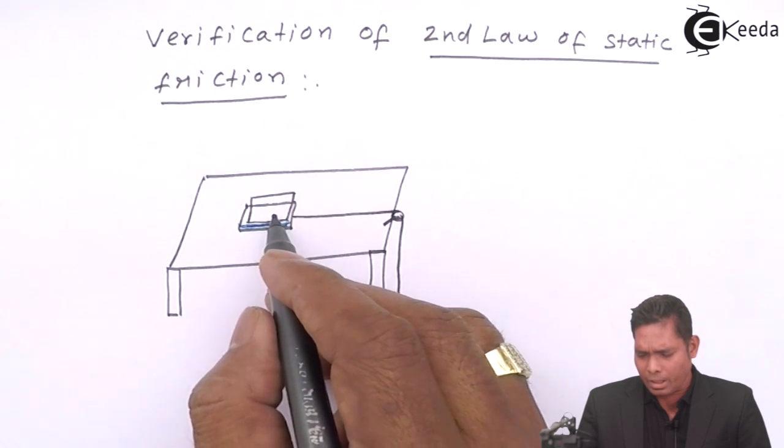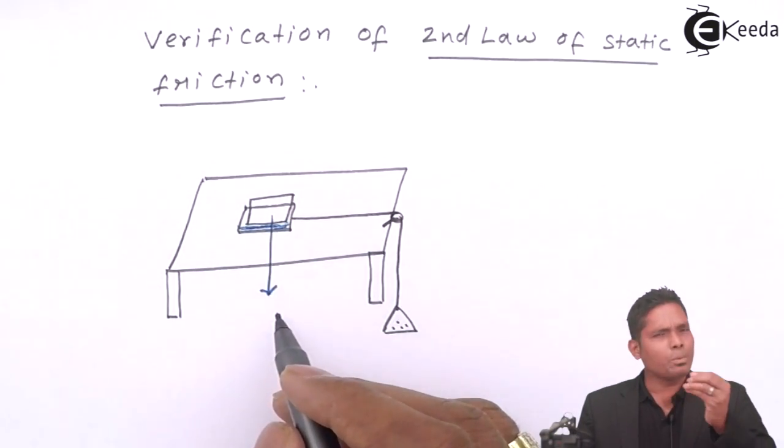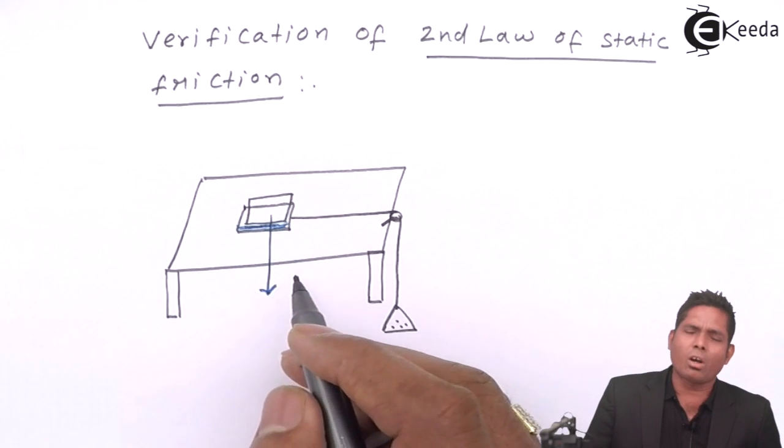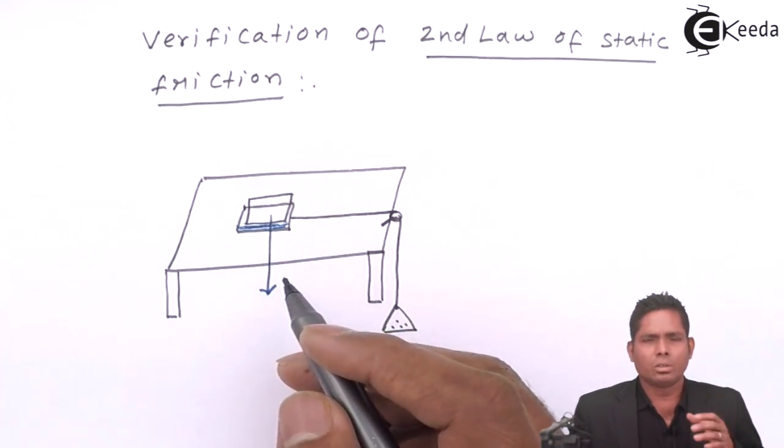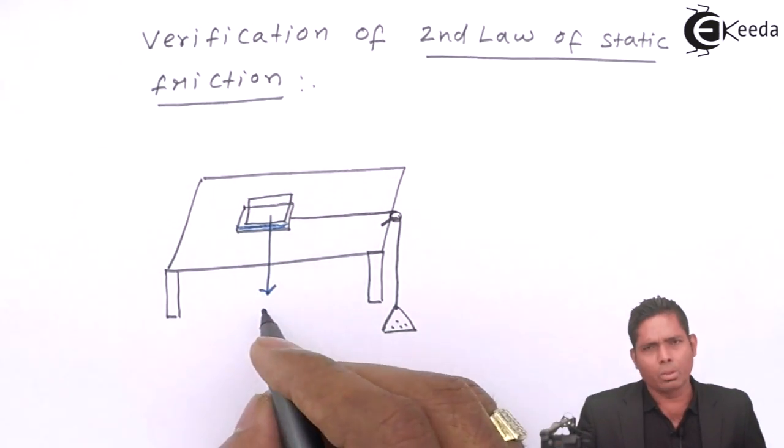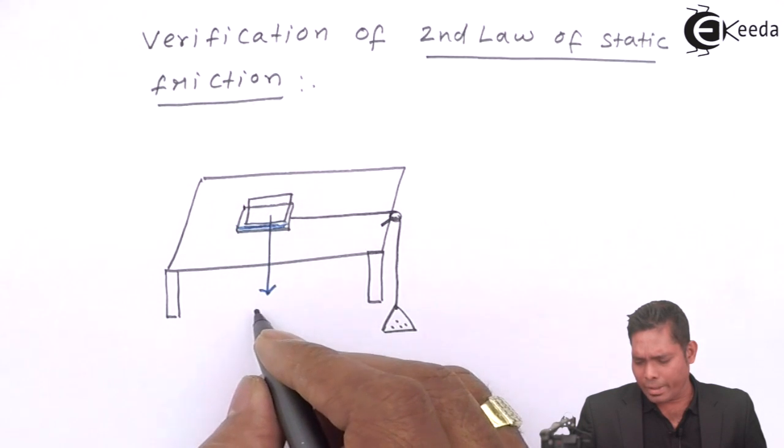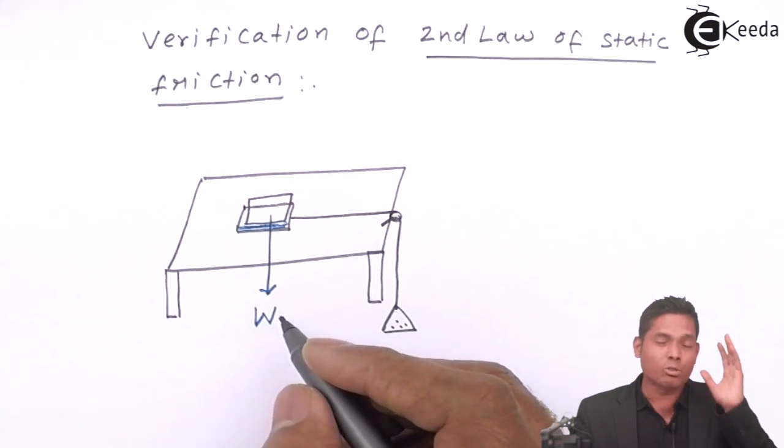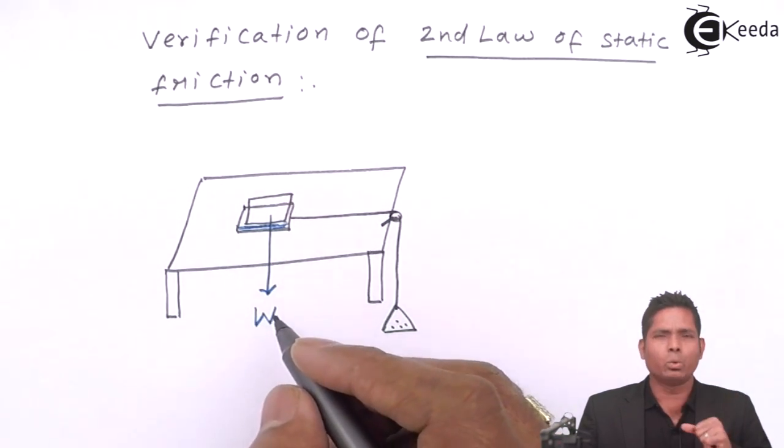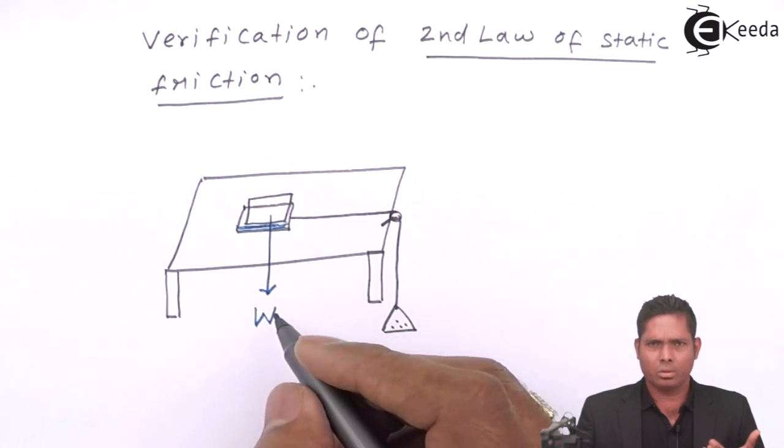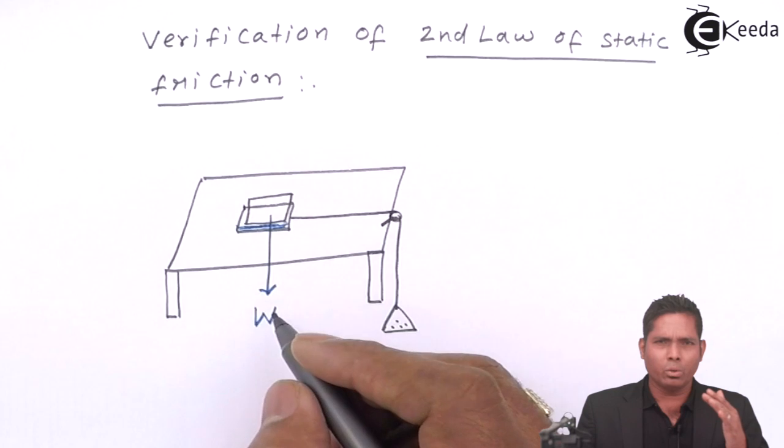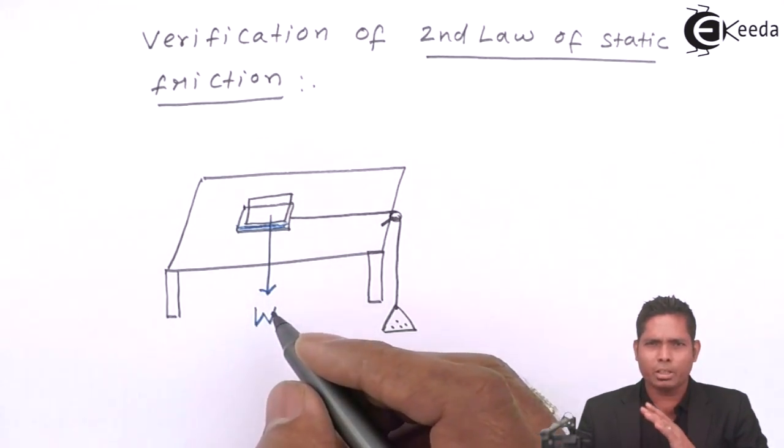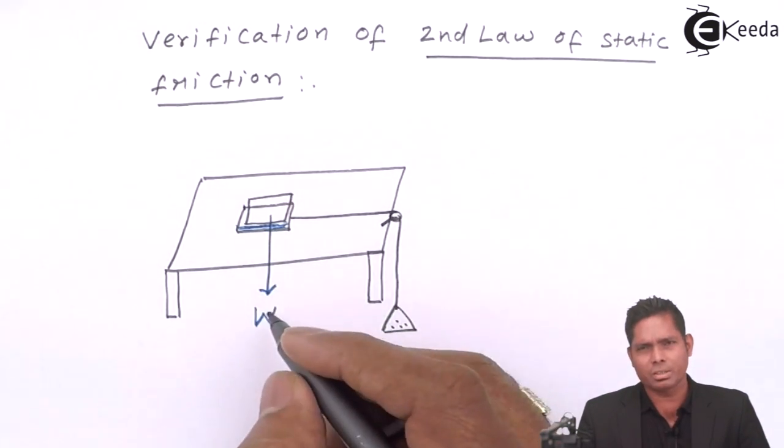And from here, the weight will be, suppose that W is the weight of single block. There are two blocks, so weight is two W. I will write it is only W. I will assume that W by two is the weight of one block. So, W by two, one block. W by two, another block. So, total weight is W.